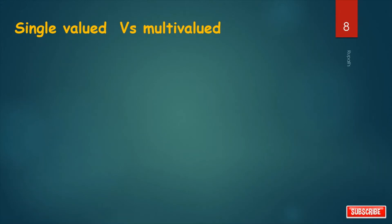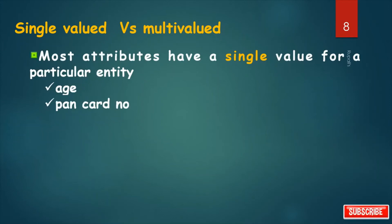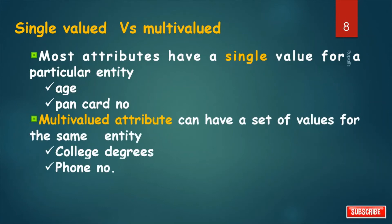Single-valued versus multi-valued attribute. Attributes that can have single value at a particular instance of time are called single-valued attribute. Most attributes have a single value for a particular entity. A person can't have more than one age value. Therefore, age of a person is a single value attribute. Same for pan card number. Multi-valued attribute can hold multiple values. It is represented with double ellipses. So multi-valued attribute can have a set of values for the same entity. Like a person can have more than one phone number, so phone number attribute is multi-valued. Same for college degree attribute.